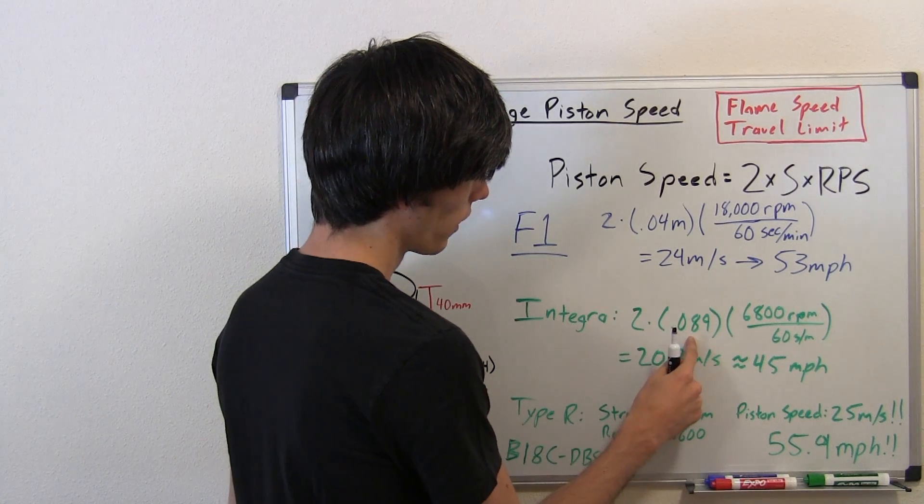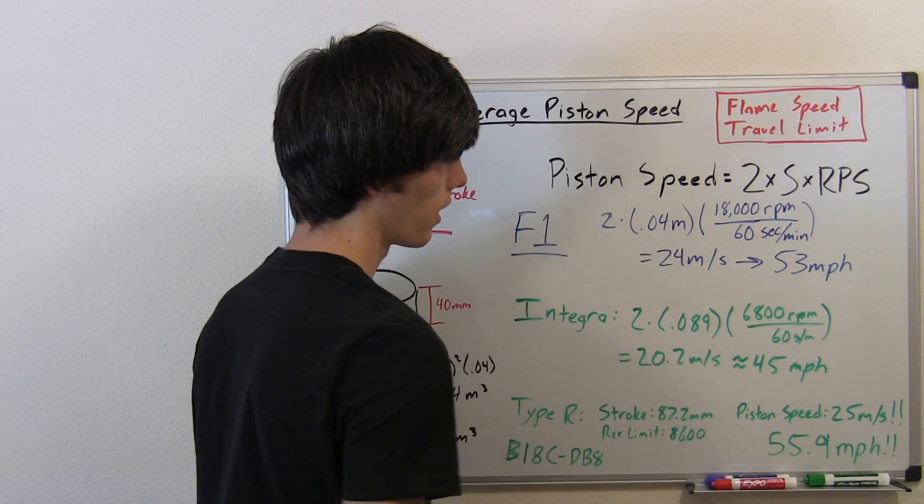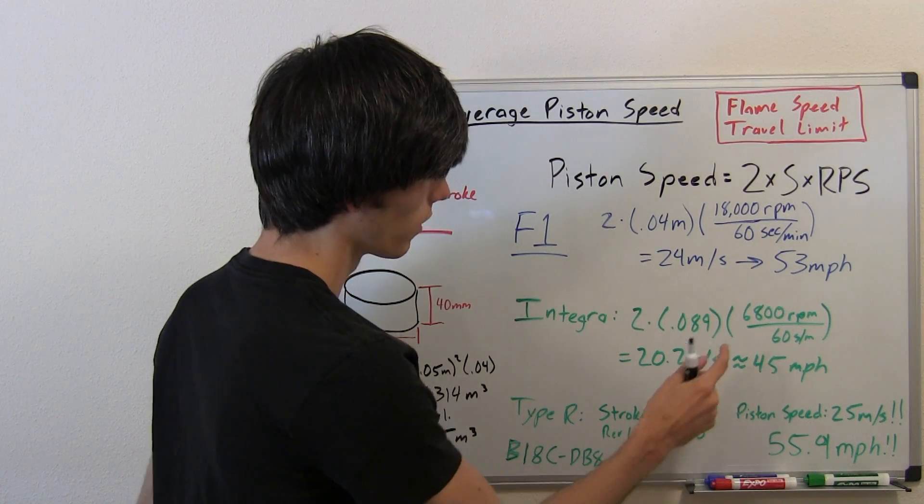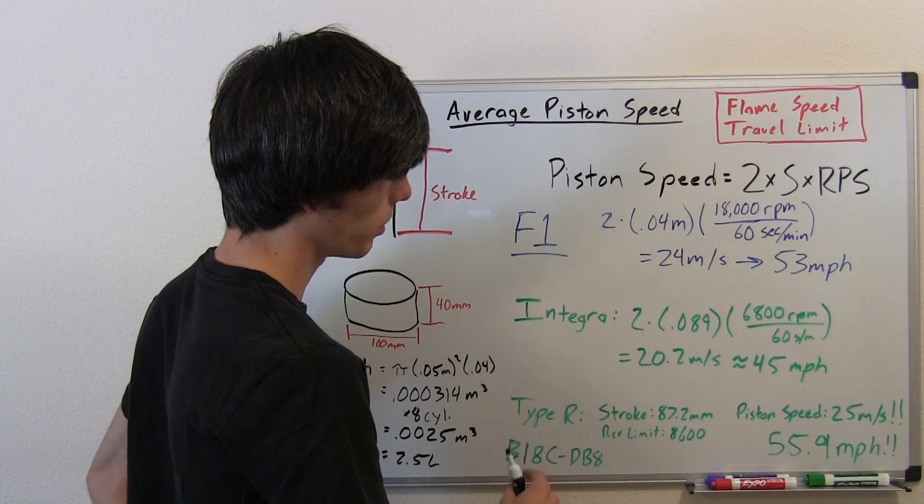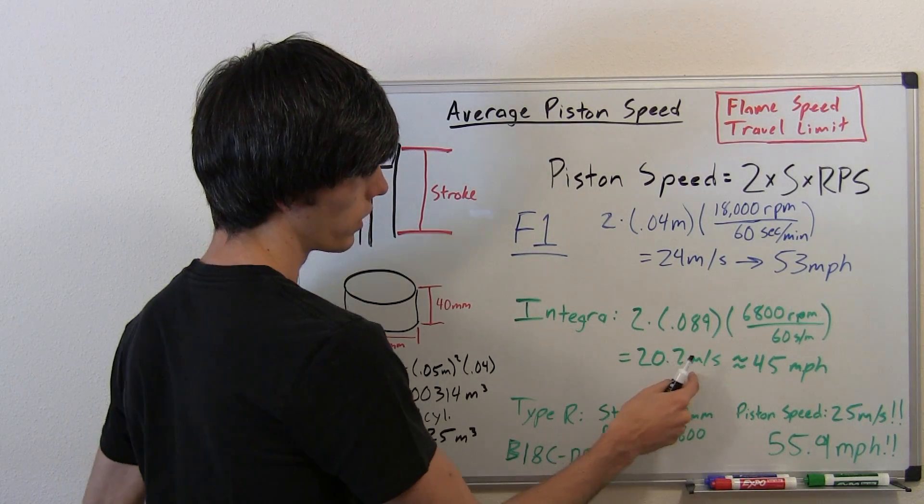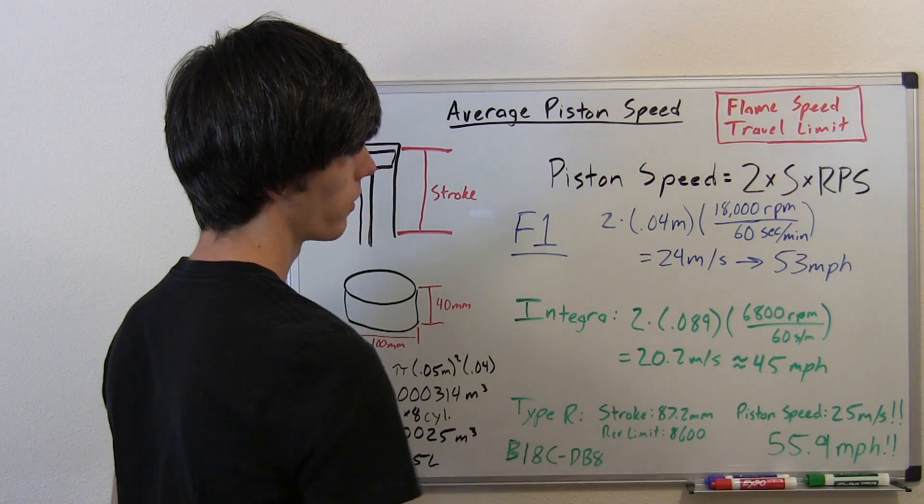We've got two times the stroke of my engine, which is 89 millimeters, and the redline is about 6,800. Do the math there, multiply those across, you get a speed of 20.2 meters per second, or 45 miles per hour.